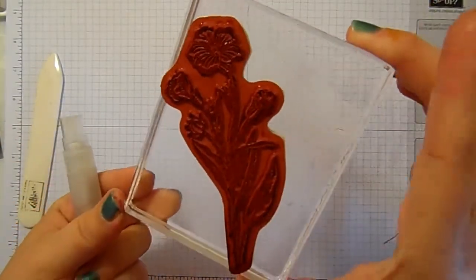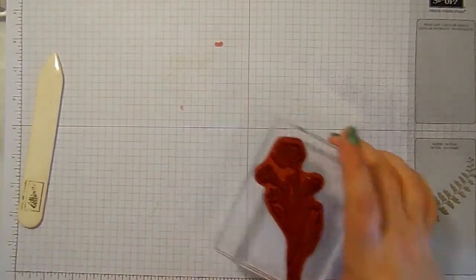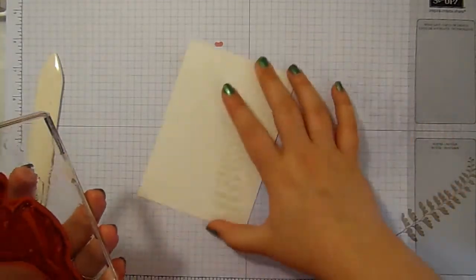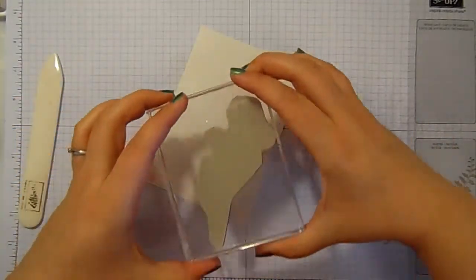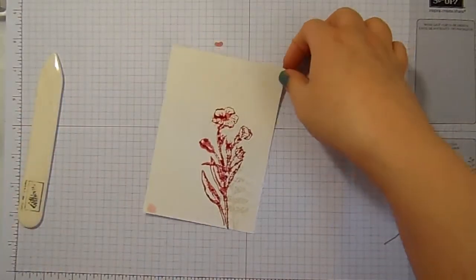You can see how blurry that stamp has now become. How wet my grid paper is over here. And then I'm going to stamp that onto my watercolor paper, like that.